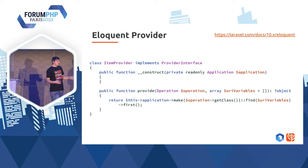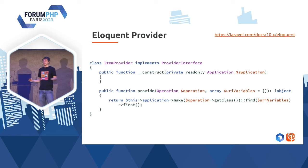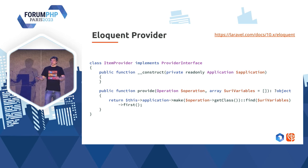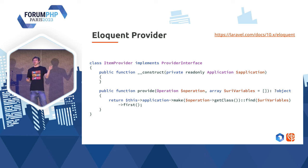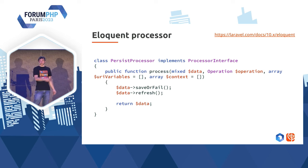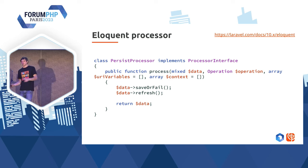Pour la suite, j'ai dû brancher le système de persistance, qui ici est Eloquent. Pour faire ça, j'ai de nouveau créé un provider. Je lui ai dit : quand on va récupérer mon livre, on va faire `app()->make(Book::class)->find()` avec les URI variables — toutes les variables que vous avez dans votre URL. Et je récupère le premier. Pareil, je vous ai mis un exemple de la persistance : je sais que `data` c'est un modèle Eloquent, je fais `saveOrFail()`, puis `data->refresh()`, et je renvoie `data`.